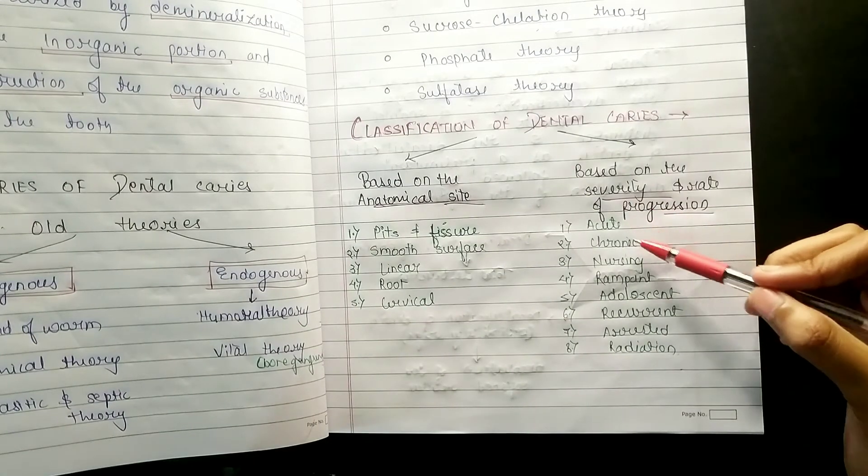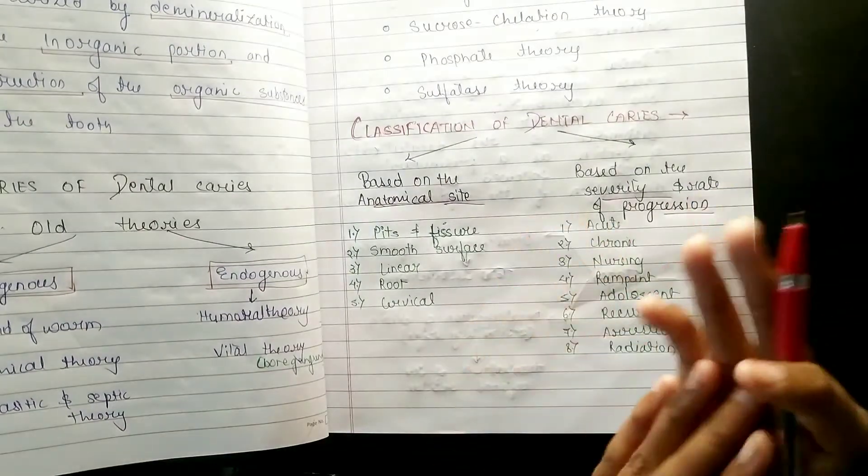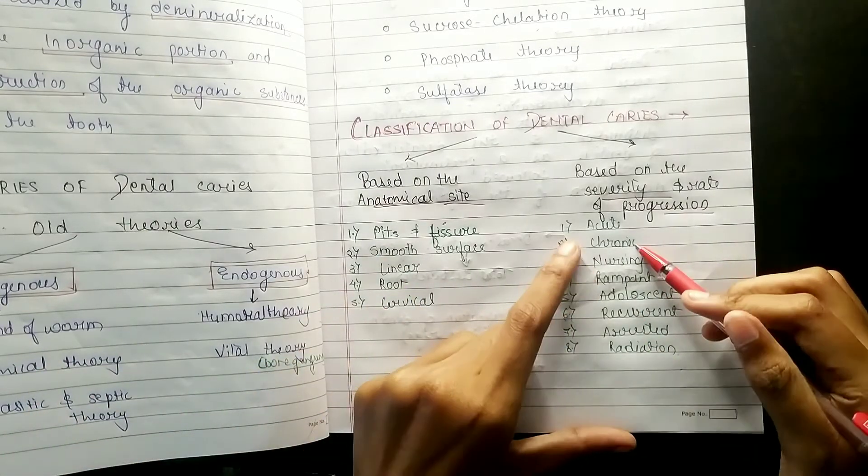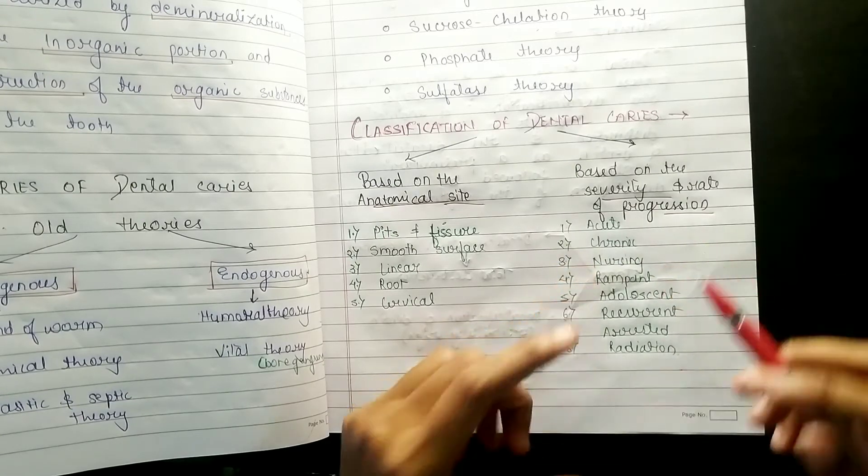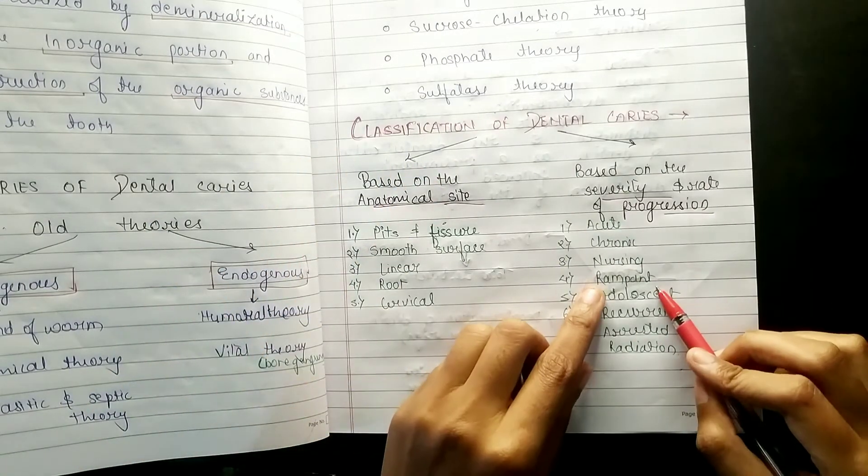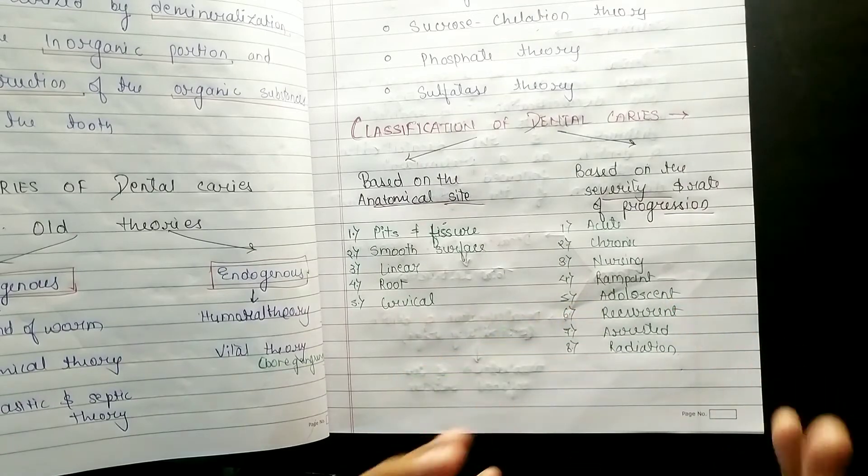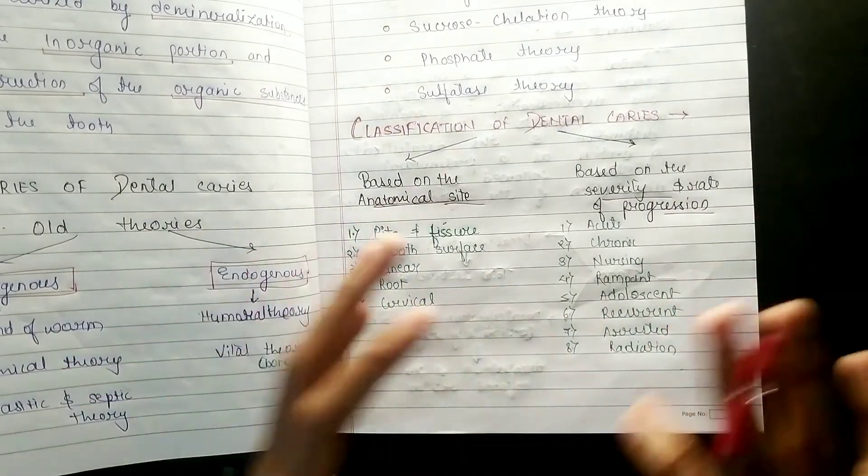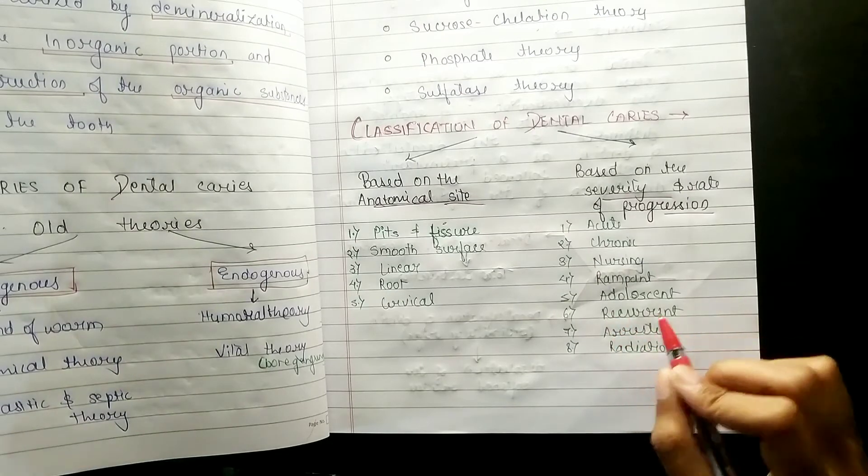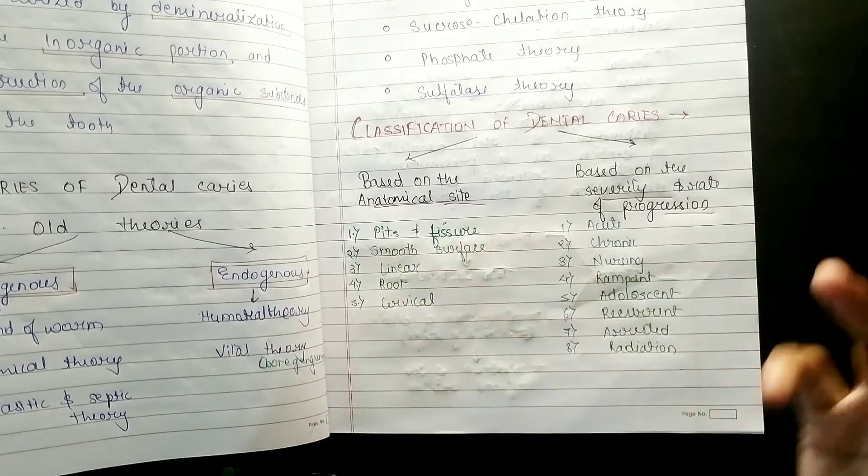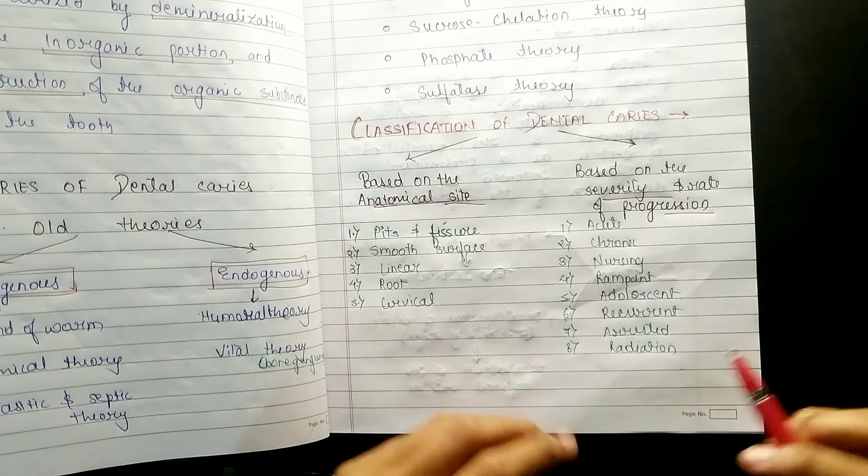Rampant, adolescent, recurrent, arrested, radiation. So acute and chronic: when chronic situation we keep nursing, so that patient can take care of nursing. Chronic disease because nursing. Now, chronic disease is not like rampant.